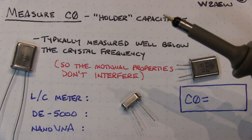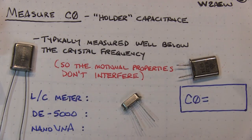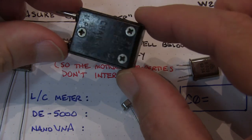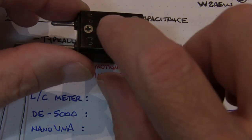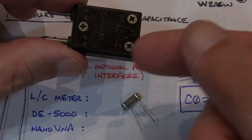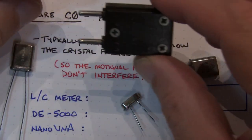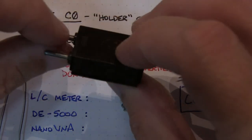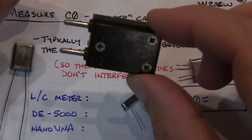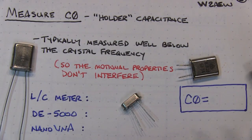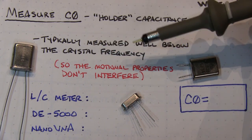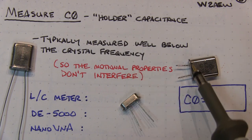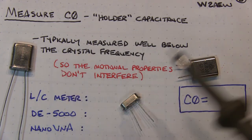First, we'll measure the holder capacitance, C0. It's called the holder capacitance because way back in the day, guys would oftentimes cut and file and grind their own crystals and mount them in a holder — essentially a couple of metal plates and a little spring that you'd put your quartz wafer between. Even though we don't grind our own crystals anymore, the capacitance of the housing is still called the holder capacitance. We'll measure it using a test frequency well below the crystal frequency, so the motional properties don't interfere with measuring essentially the capacitance of the mechanical holder.